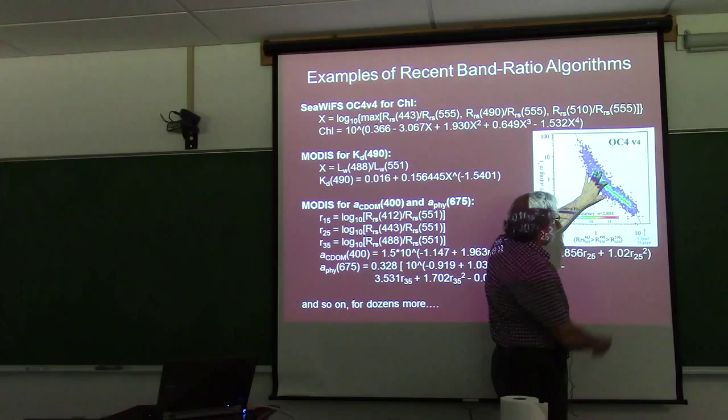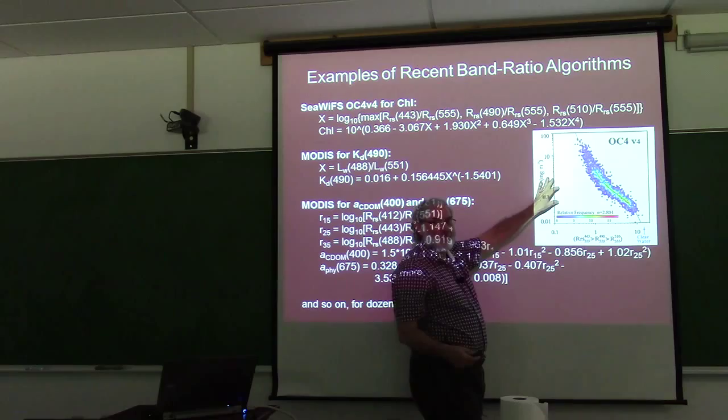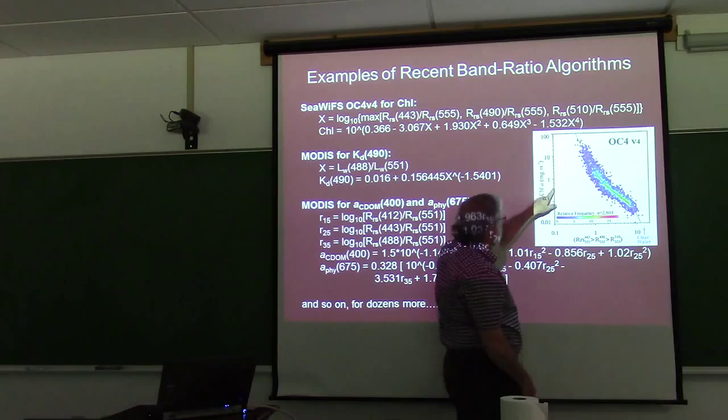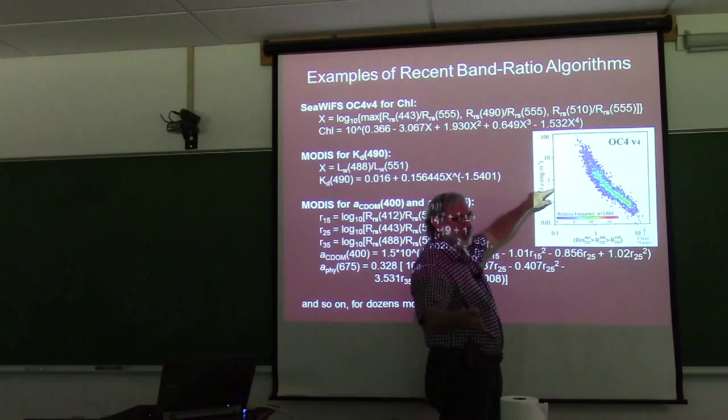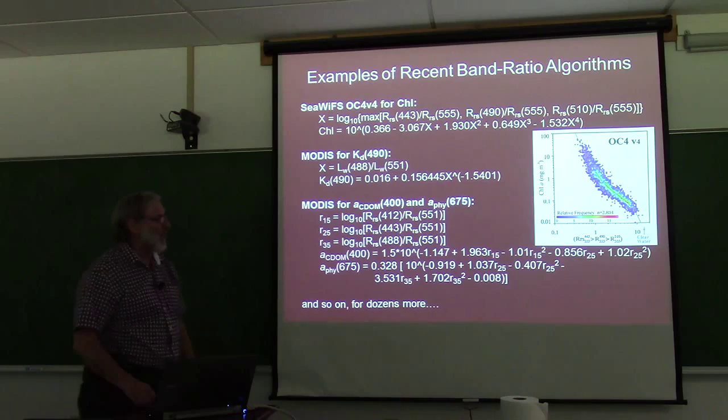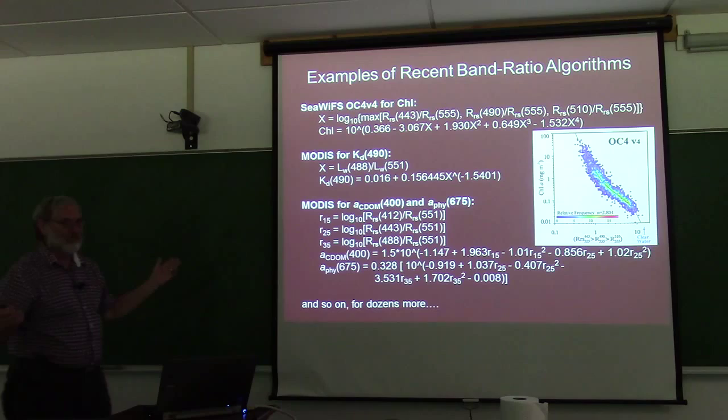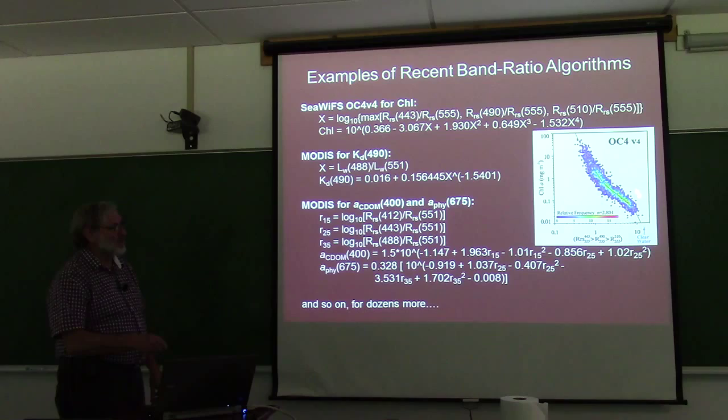People sometimes forget there are error bars, and they say, oh, the band ratio gives chlorophyll of 6.023 — well, yes, 6.023 plus or minus one. It's used operationally and it's certainly useful; you just have to keep in mind it's based on data from different water bodies and may or may not give the right answer.